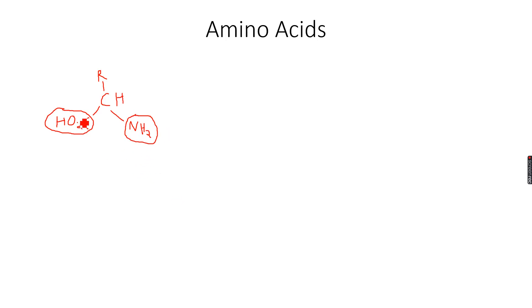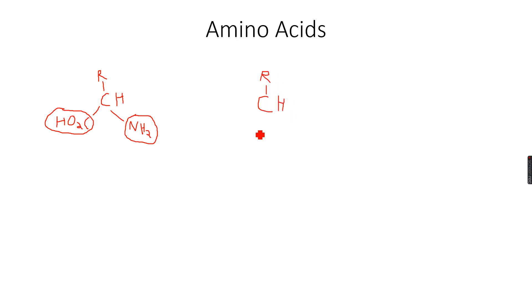Acids are proton donors and bases are proton acceptors, so the carboxylic acid group can donate a proton to the NH₂ group — one wants to donate a proton and one wants to accept a proton, so they make a perfect pair. What we get is O₂C negative, which is a carboxylate ion because it has donated an H atom, and we get an NH₃⁺ ion because it has accepted a proton.